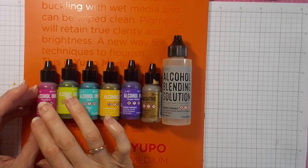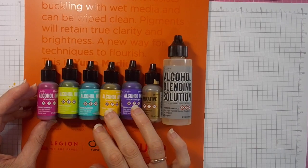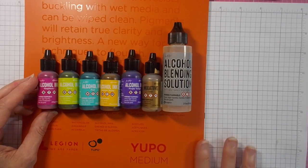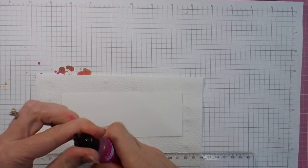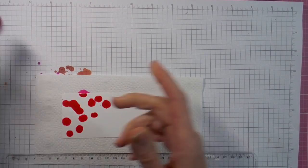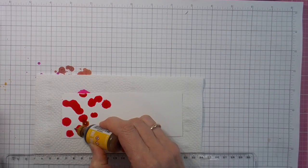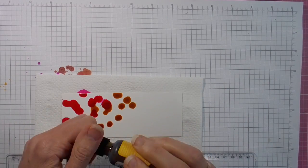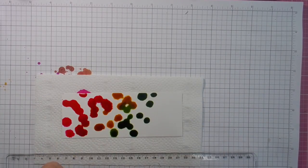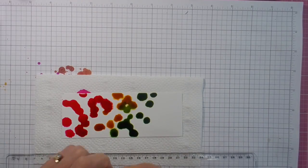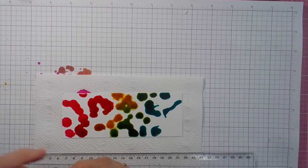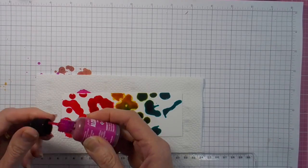Hi there, it's Linda here. Thanks for joining me today as I have my first play with some new alcohol inks. I've got some Ranger alcohol inks, the alcohol blending solution, and a gold mixative. I'm going to show you exactly what I do today, all the good and the bad of my first attempts with these fun inks. I held off for a long while getting them, but I'm very glad I have. They're a lot of fun.